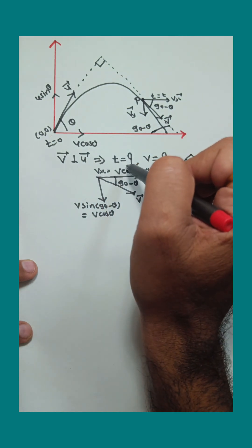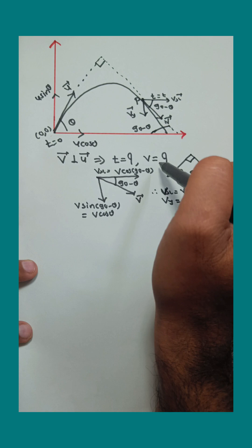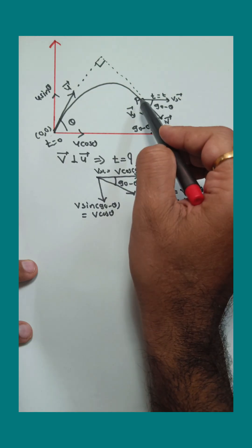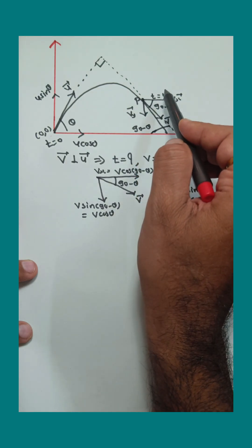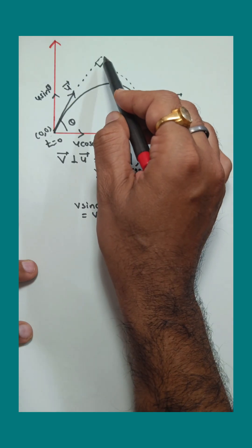Now find out the time at which v is perpendicular to u, as well as the equation of v. Suppose at point P, at time t, the v vector makes an angle 90° with u.